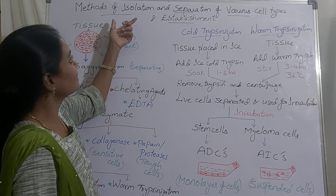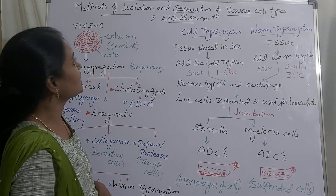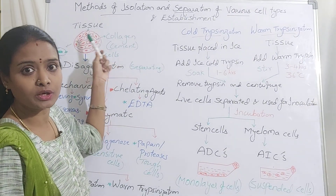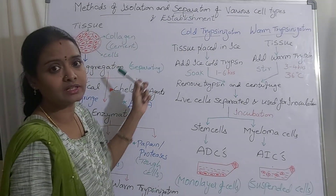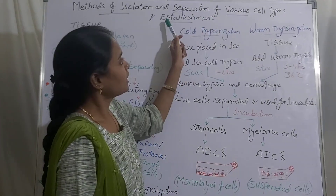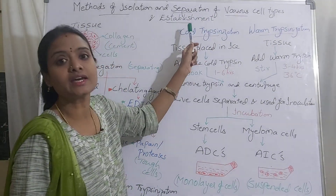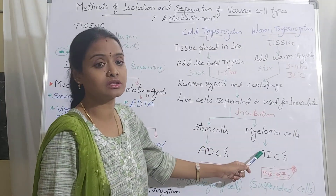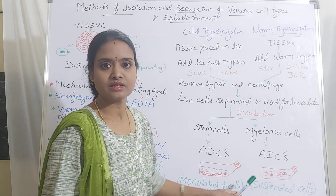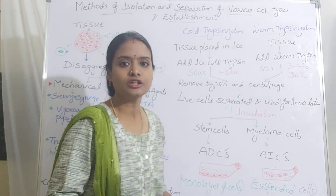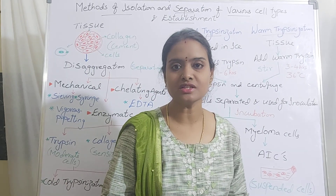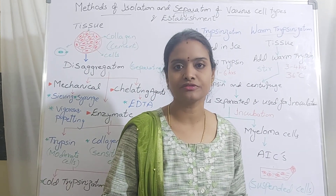So you can see it is the isolation — isolating cells from the tissue, separation, that is your disaggregation process — and the establishment, where you are establishing cell lines or cell cultures. If you have any doubts, put them in the comments and subscribe for further videos.